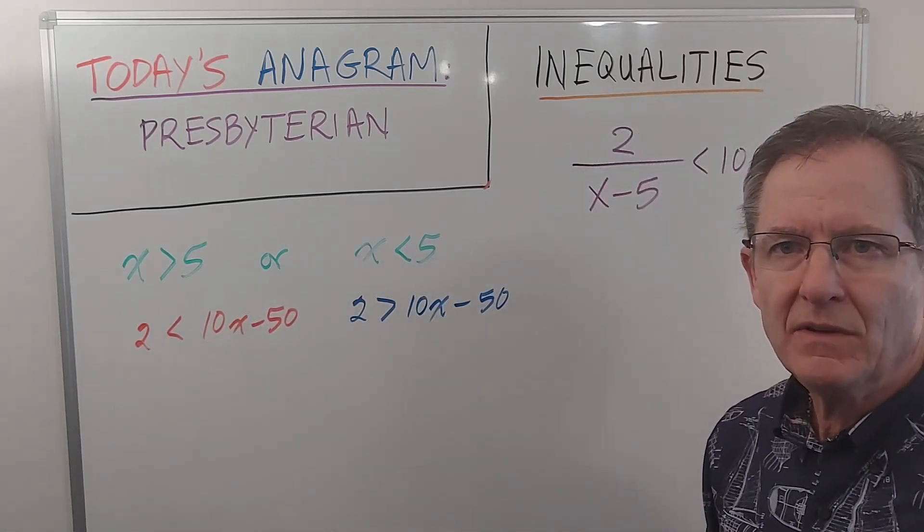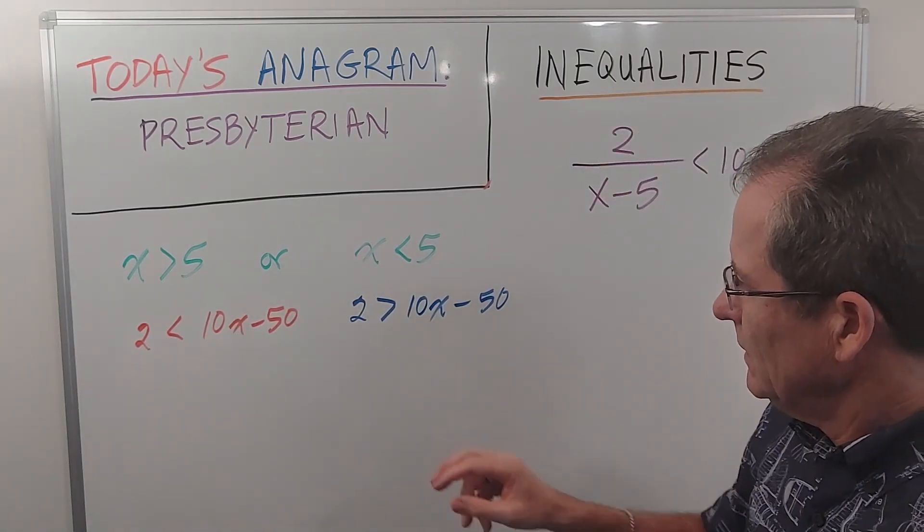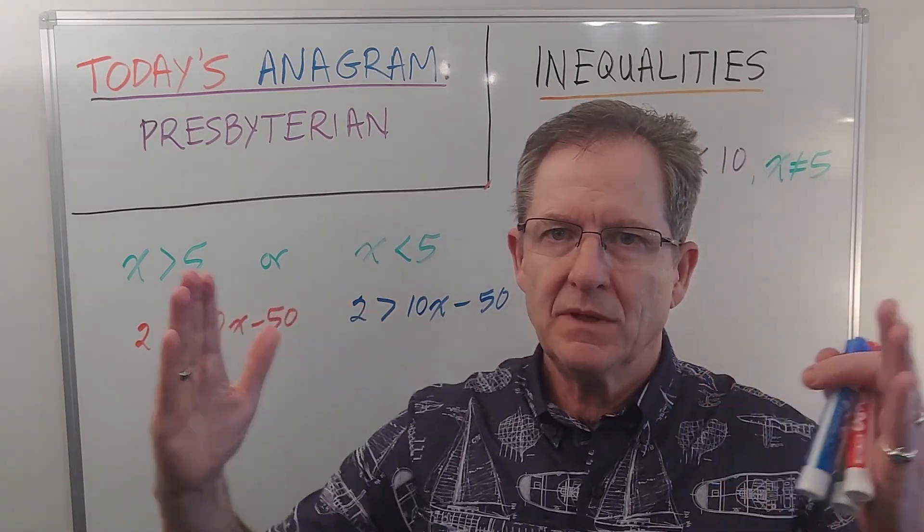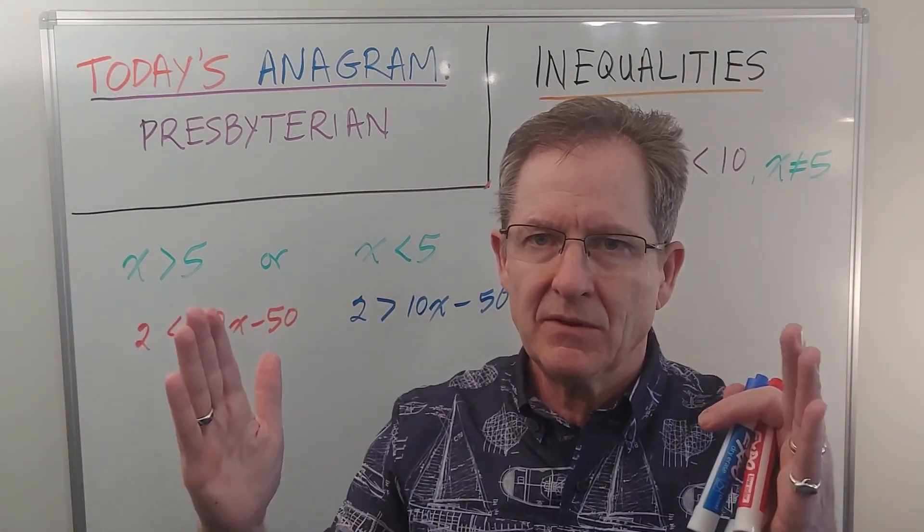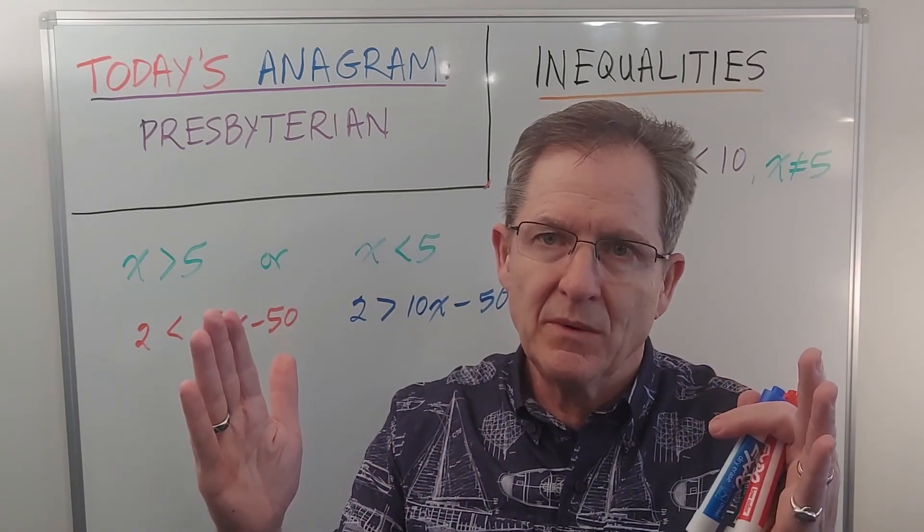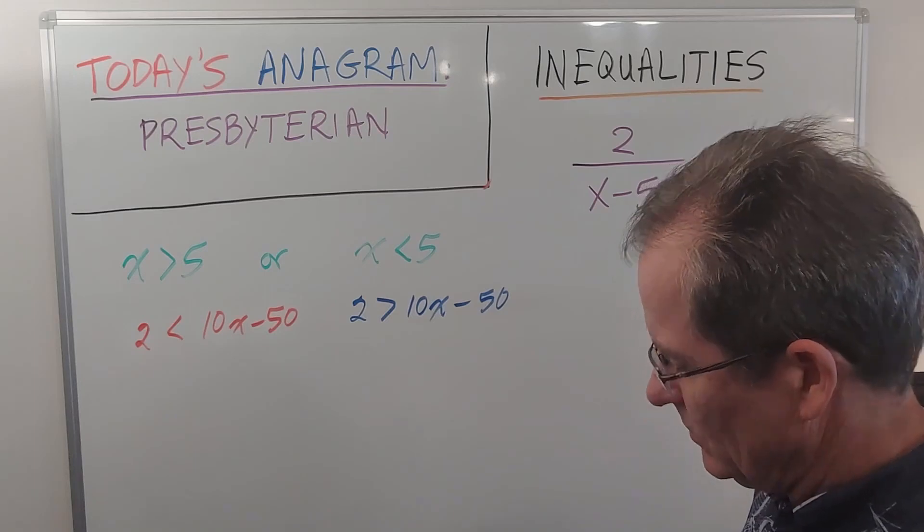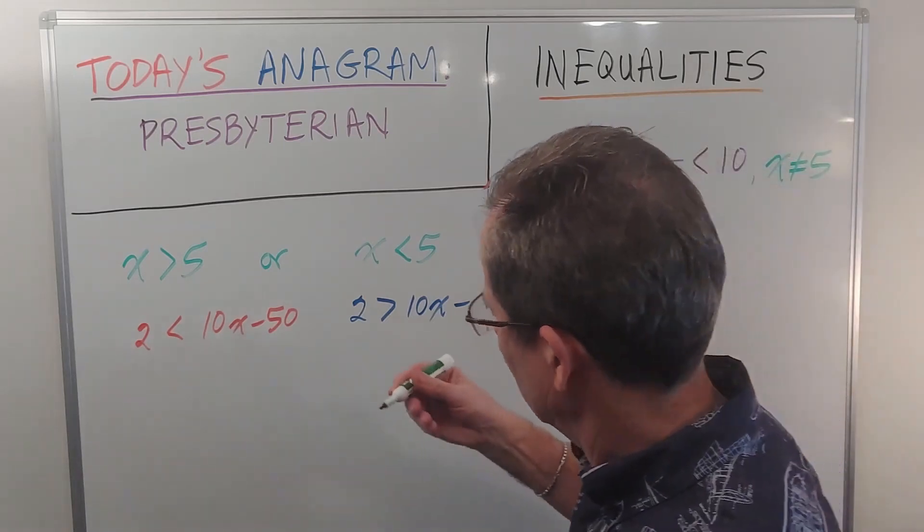So let's solve each of those separately and see if we get 'and' or 'or'. We'll get 'or' if there are two regions that are separate, and we'll get 'and' if there's one region between two numbers. So let's find out if it's going to be 'and' or 'or'.